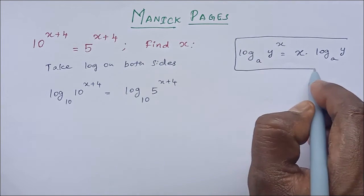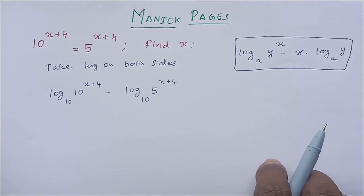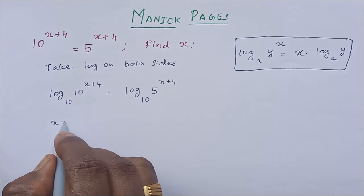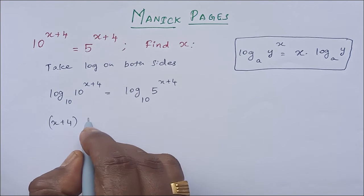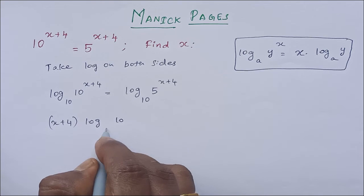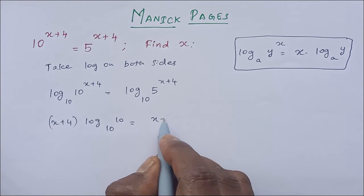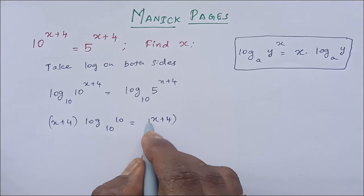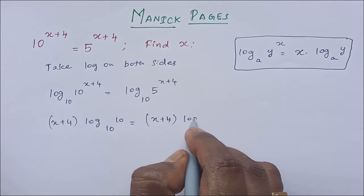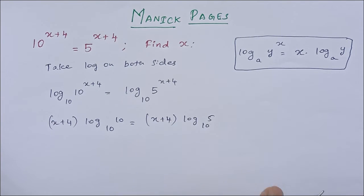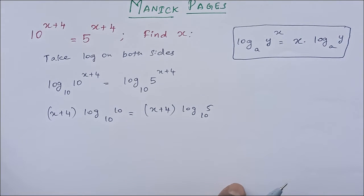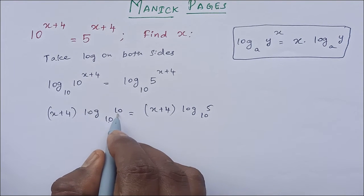By applying this property, we can write this like x plus 4 times log 10 to the base 10, which is equal to x plus 4 times log 5 to the base 10. Now log 10 to the base 10 is 1, so this becomes x plus 4 is equal to, we can multiply this inside, x times log 5 to the base 10